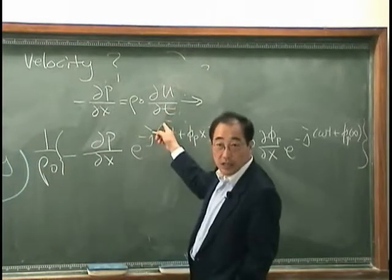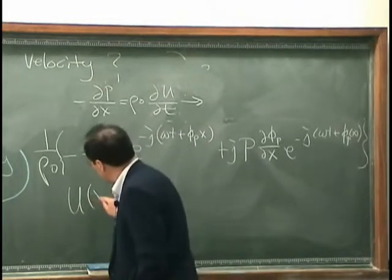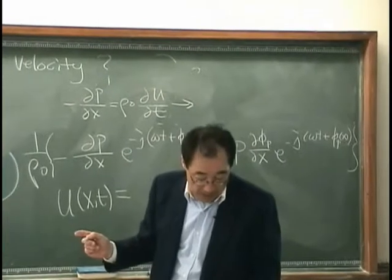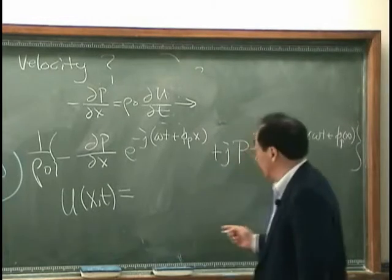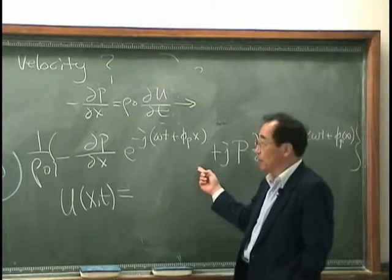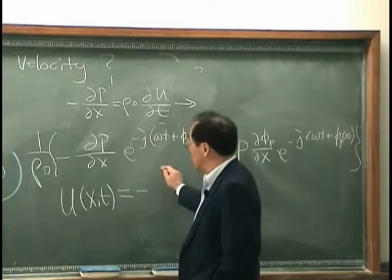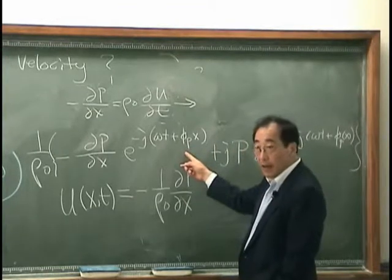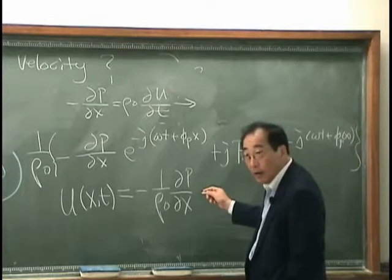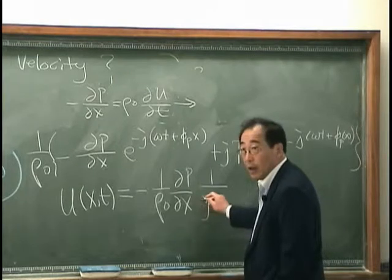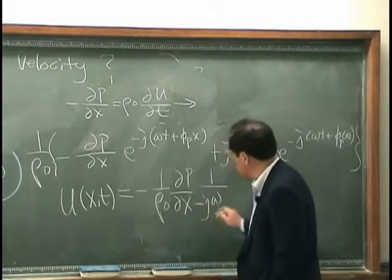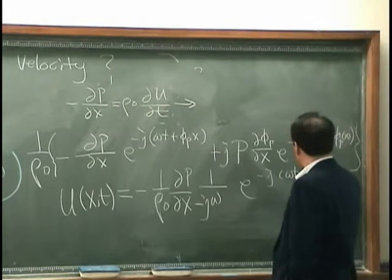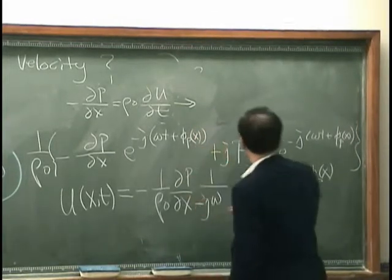And that is dU/dT, right? And then I integrate this with respect to time — what will we get? The first term would be minus one over ρ₀ times dP/dX. Integration with respect to time — one over Jω or minus Jω? Minus Jω. Thank you. Minus Jω. And then I have exponential minus J(ωt) plus ΦP.